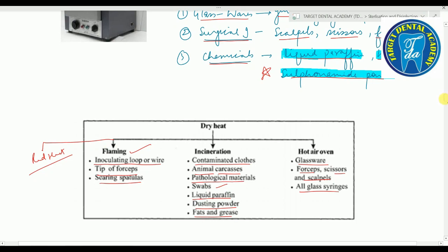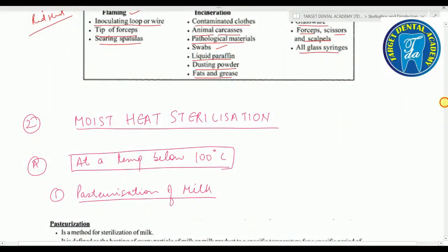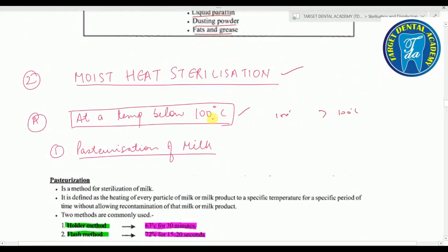Now coming to moist heat sterilization. As already discussed, there are three temperature categories: below 100°C, at 100°C, and above 100°C. We will start with below 100°C.